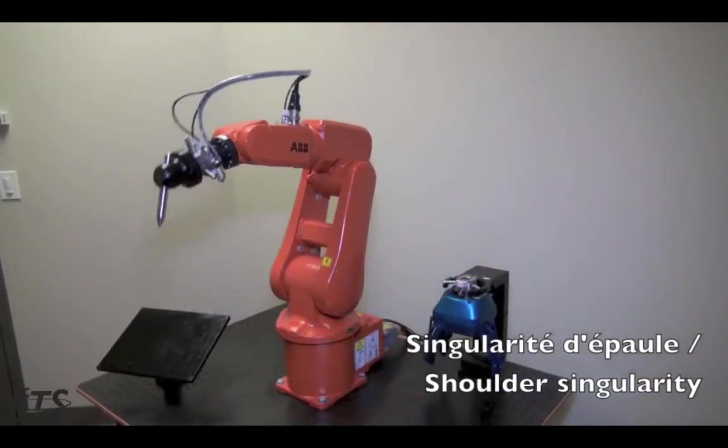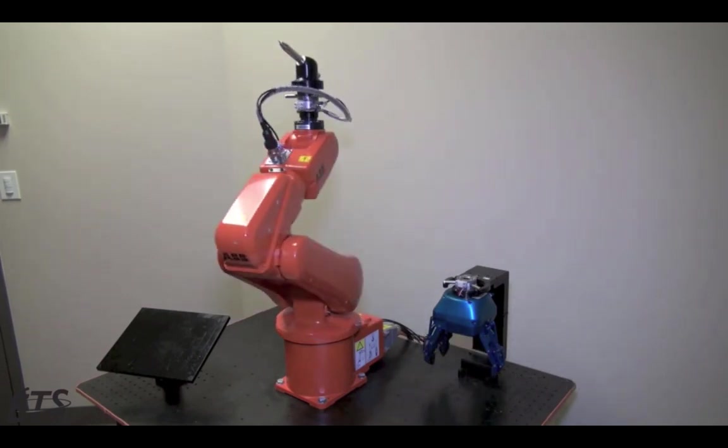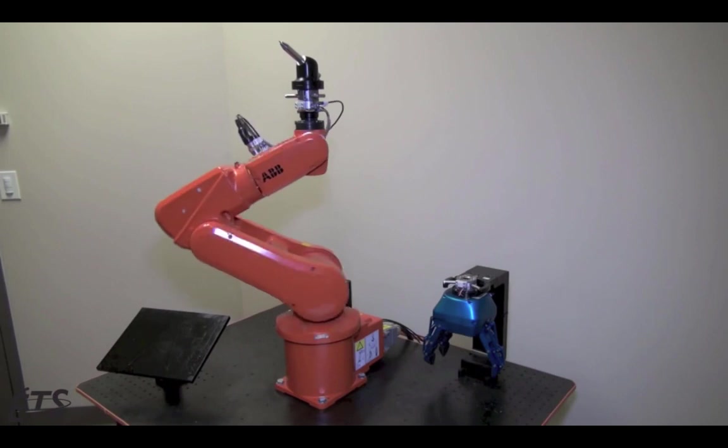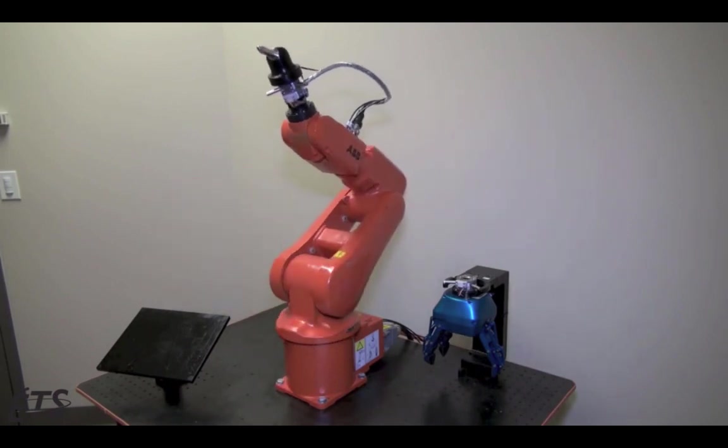Next ones that we see are shoulder singularities. These happen when the center of the robot's wrist aligns with the axis of joint one. It causes joints one and four to try and spin 180 degrees instantaneously.